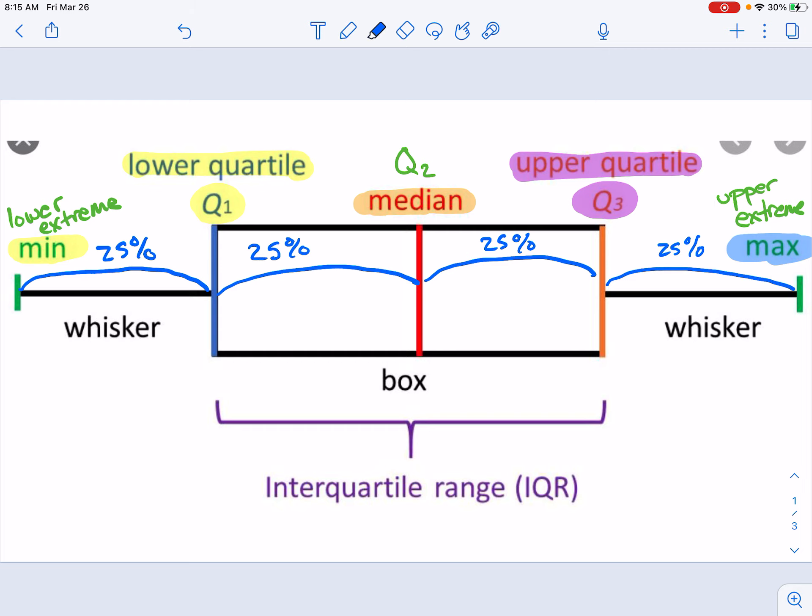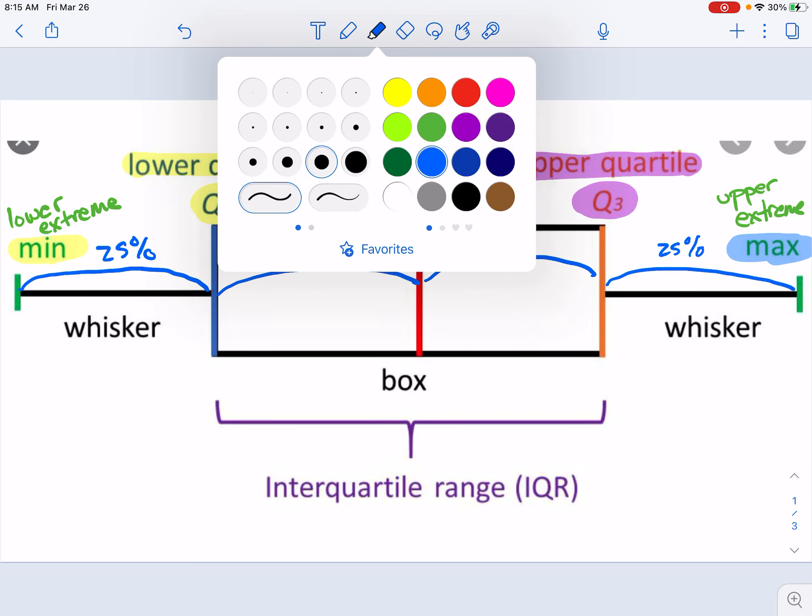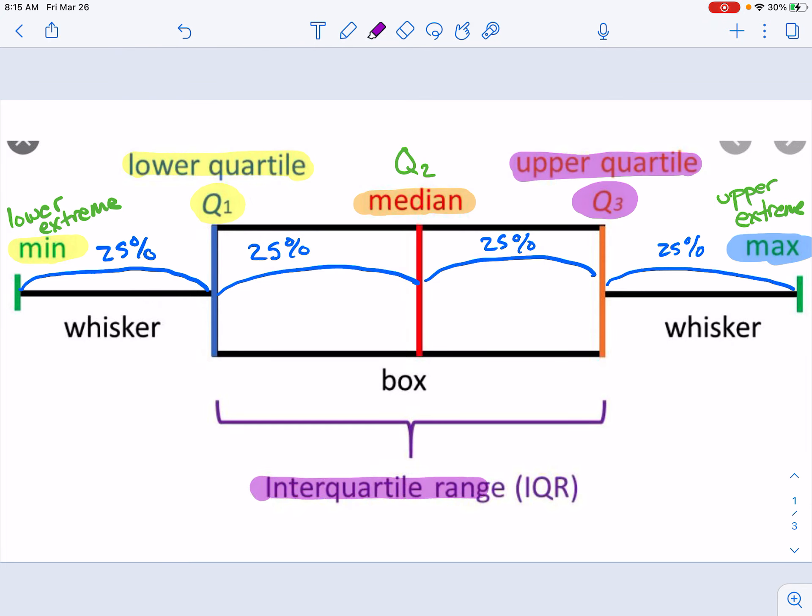And then one other thing that we get asked about is the interquartile range, or sometimes called the IQR. The interquartile range is the range of the box, because the box is our two interquartiles. So our interquartile range is the middle 50% of the data.